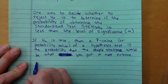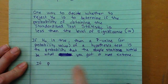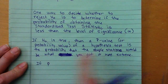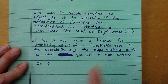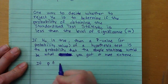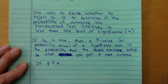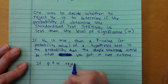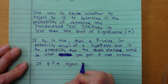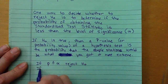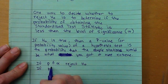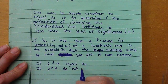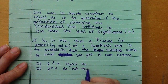So if p — the probability that the sample statistic is what we got or more extreme — is less than or equal to alpha, which is our level of significance, then we reject H sub-zero. But if p is greater than alpha, we do not reject H sub-zero.